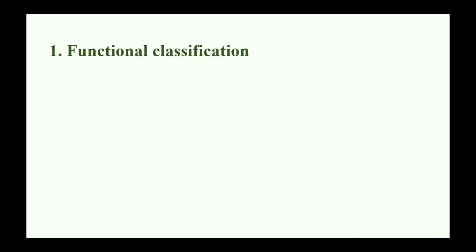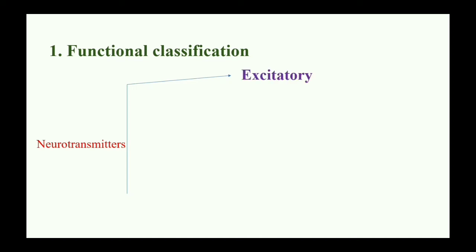Functional classification — according to functional classification, neurotransmitters are divided into three parts. First one is excitatory. Examples: norepinephrine, epinephrine, glutamate, histamine. These are examples of excitatory neurotransmitters.